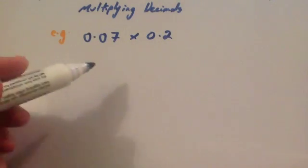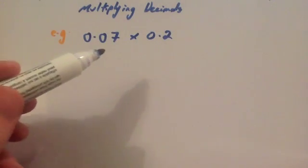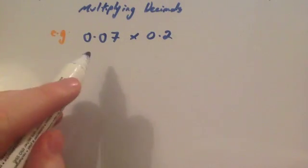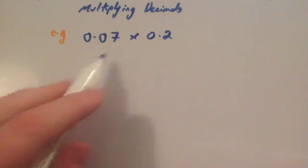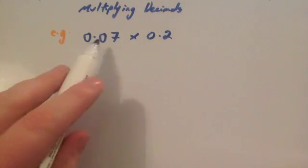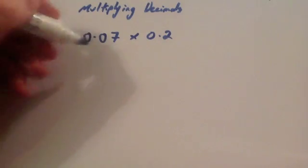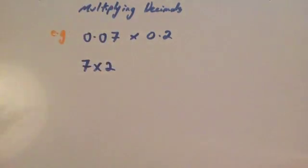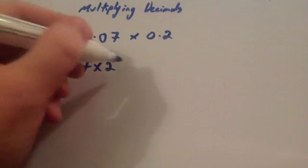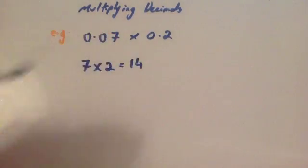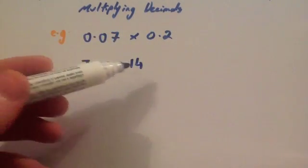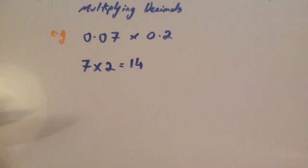This time we're going to do 0.07 multiplied by 0.2. Step one is do the sum without the decimal points, so we get 7 multiplied by 2, which equals 14. So the digits 1 and 4 have to be in our answer somewhere.